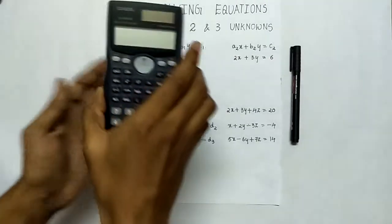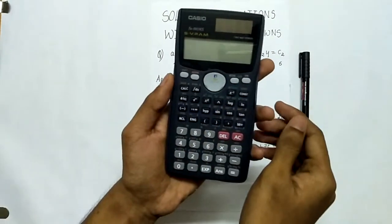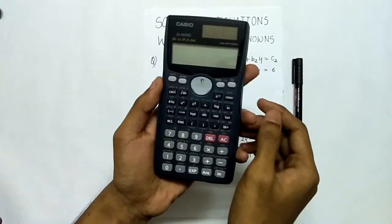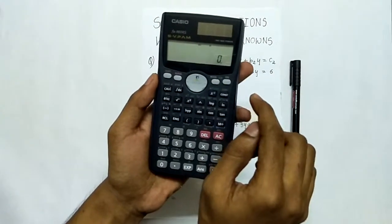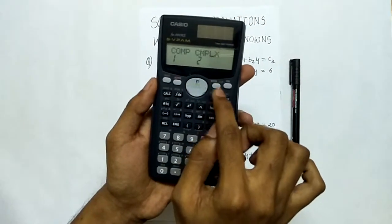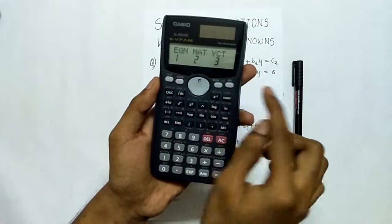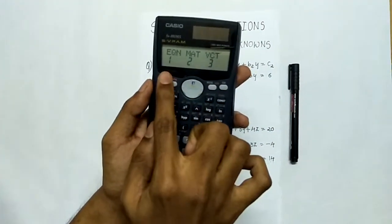Now let us see how to solve these equations using fx991ms calculator. First switch on the calculator, change the mode to equation, press the mode button thrice, 3 times, you can see something like this on the screen.